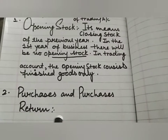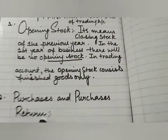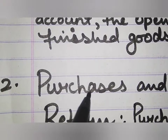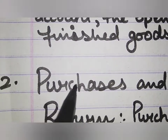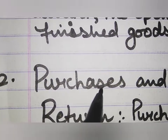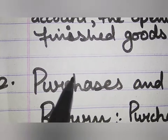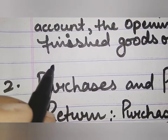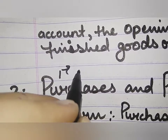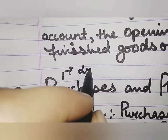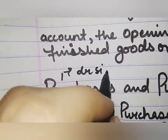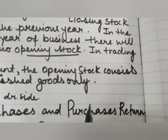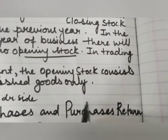The second item is purchases and purchases return. Purchases include cash and credit purchase of goods. Purchases are recorded on the debit side of the trading account after deducting the returns outward or purchase returns.